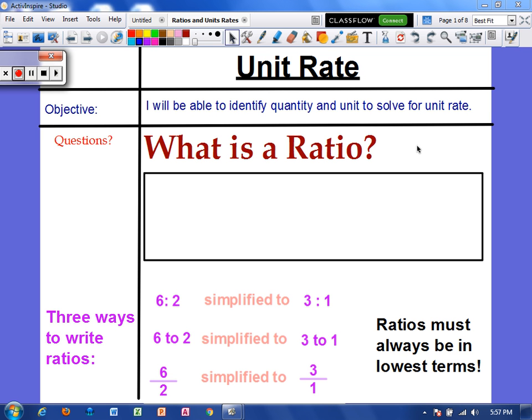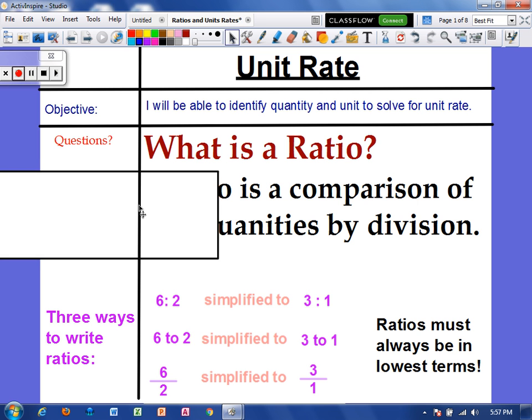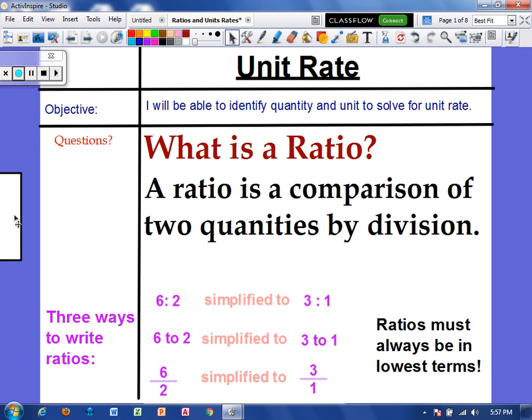I will be able to identify quantity and unit to solve for unit rate. So before we talk about rate, let's talk about what a ratio is. A ratio is a comparison of two quantities by division. So since there are two different quantities, a ratio is comparing two numbers that have different labels.